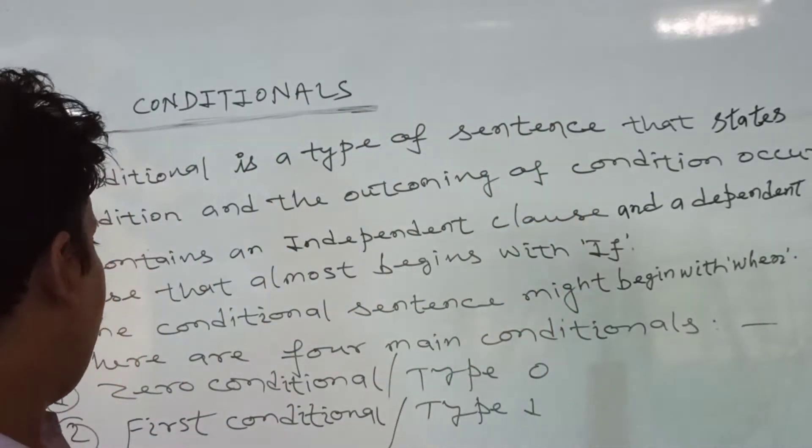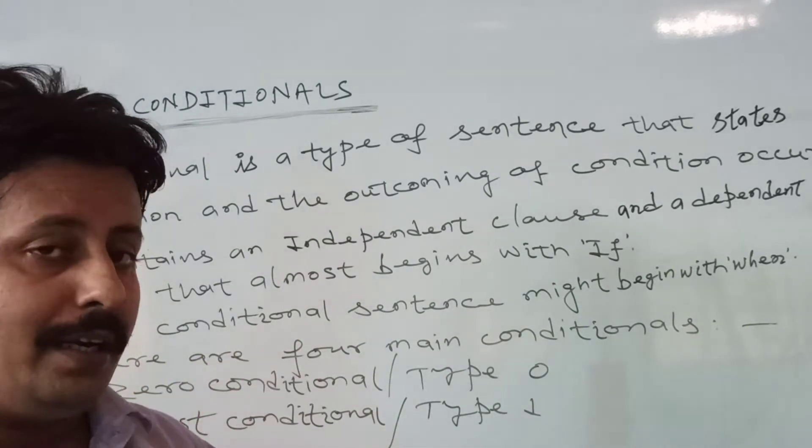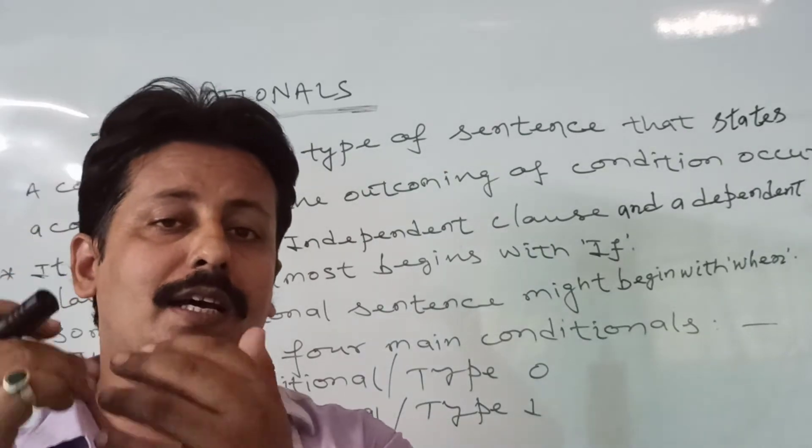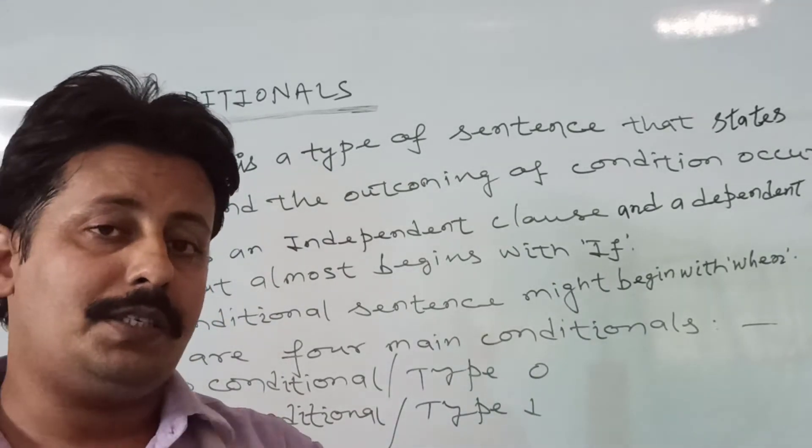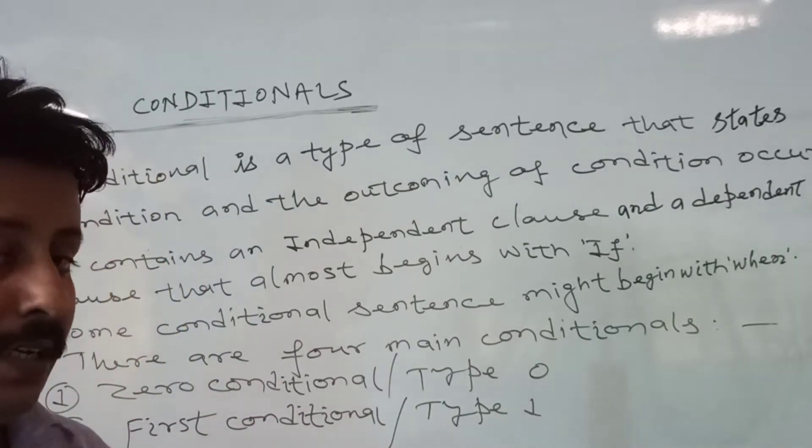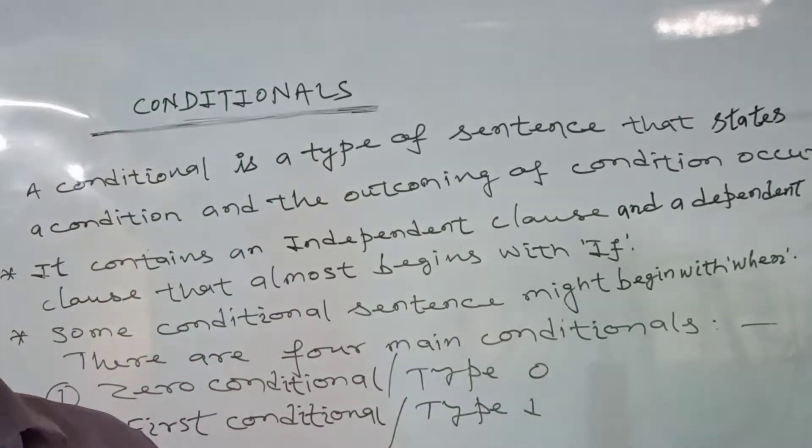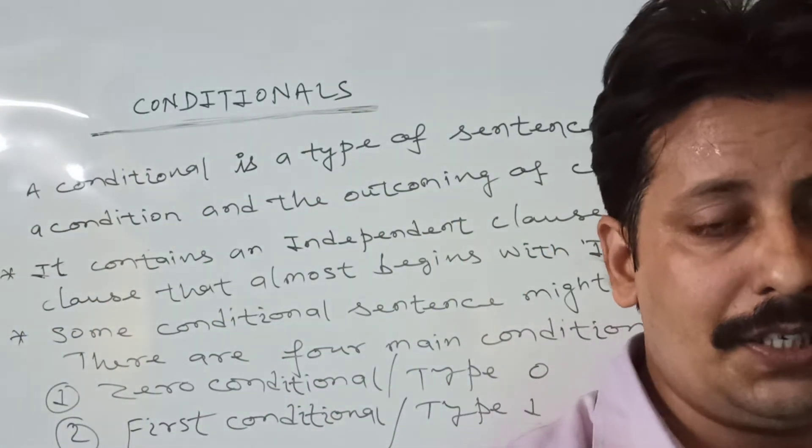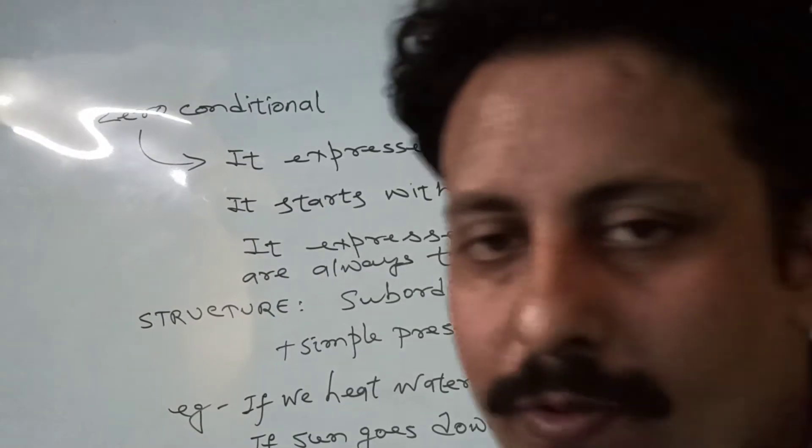Here you will see there are four main conditionals. The first one is zero conditional that is known as type zero. The second is first conditional that is known as type one. The third is second conditional that is known as type two, and the fourth one is third conditional, which means type three. Then we will discuss about one by one with their definitions and the structures.